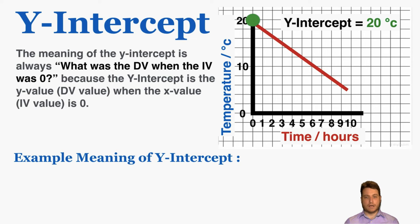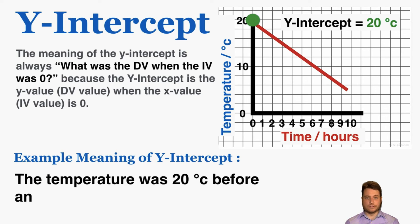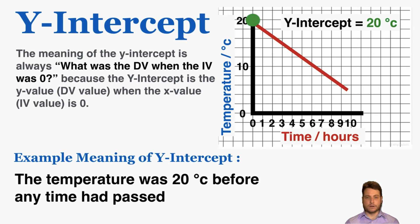For the last example with temperature, the y-intercept of the temperature graph is 20 degrees Celsius. That means that before any time passes, the initial starting temperature of the object was 20 degrees Celsius. Those are some examples of how you get the physical real-world meaning of the slope and the y-intercept of your graph.